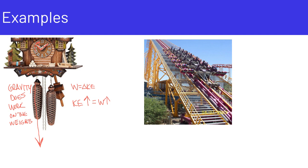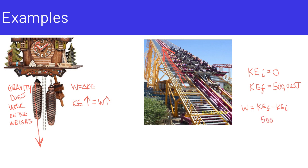In the second example, we have a roller coaster. The initial kinetic energy at the bottom of the hill is zero. As the roller coaster gets pulled to the top of the hill by a little motor pulling on a chain, the kinetic energy increases. Let's say it reaches 500,000 joules. According to the Work Energy Theorem, work equals final kinetic energy minus initial kinetic energy, so the work done is 500,000 joules.